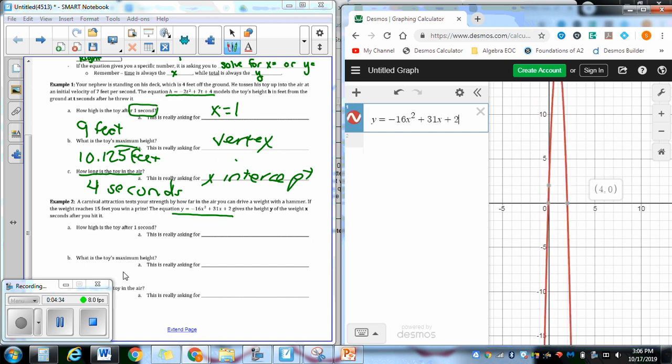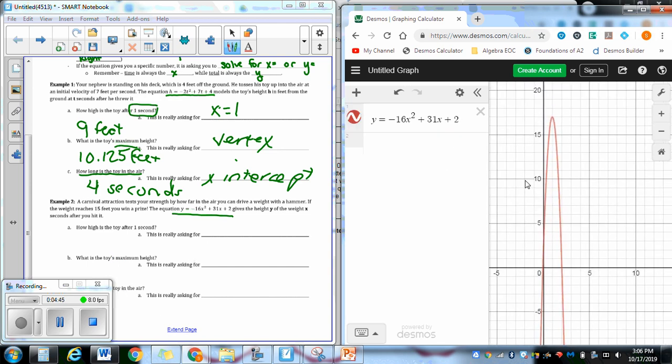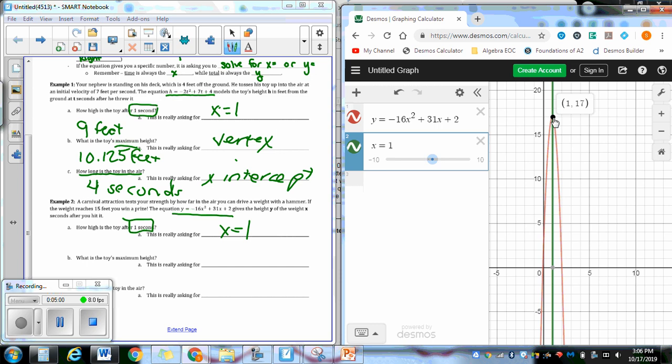And then you can tell that I copy-pasted it. All of these are supposed to say, what is the weight? How high is the weight? After one second, what is the weight's maximum height? And how long is it in the air? You can tell this one looks a little bit different, but same idea. One second is a time measurement, and it is a specific number. So this will be x equals 1, and find where they cross. And they cross at 17 feet. Which, by the way, does mean that we win the prize.